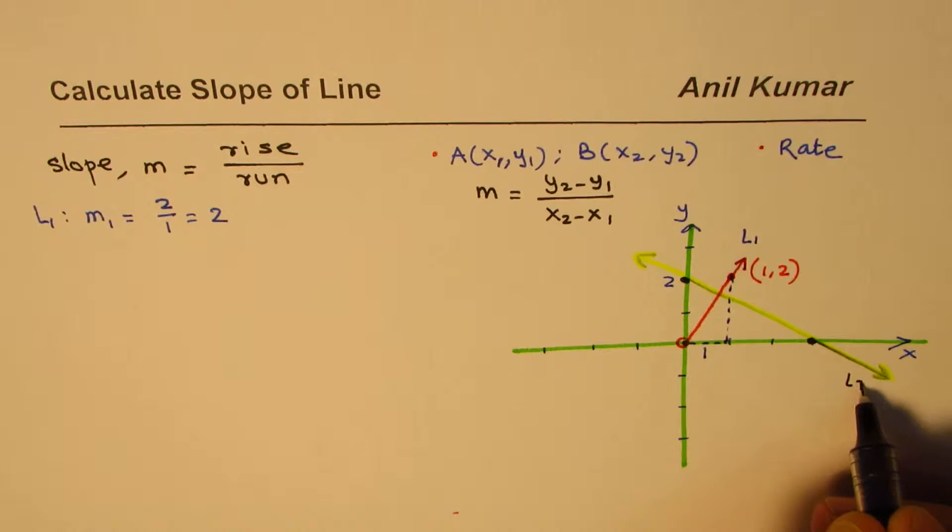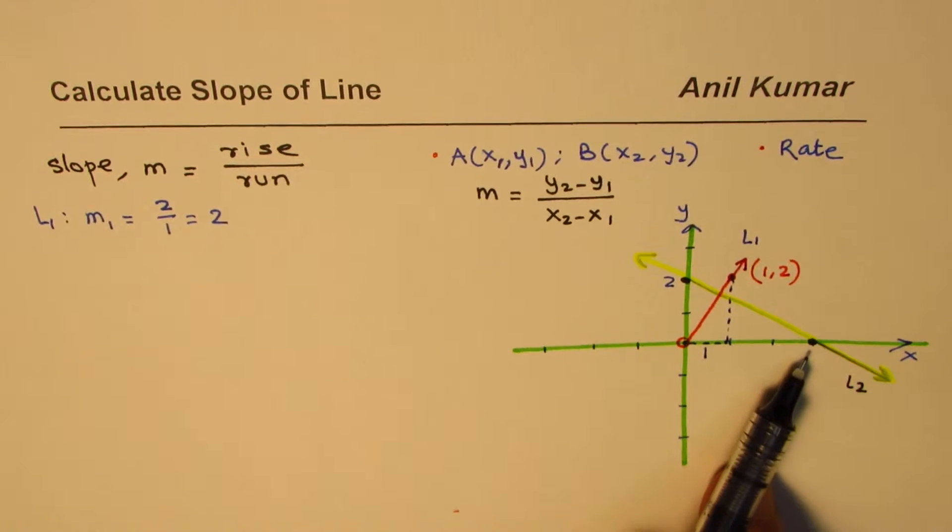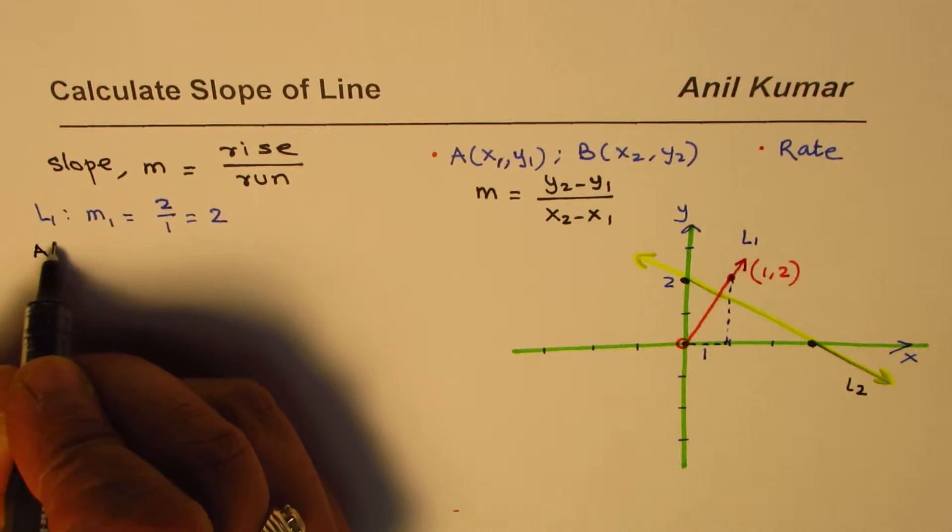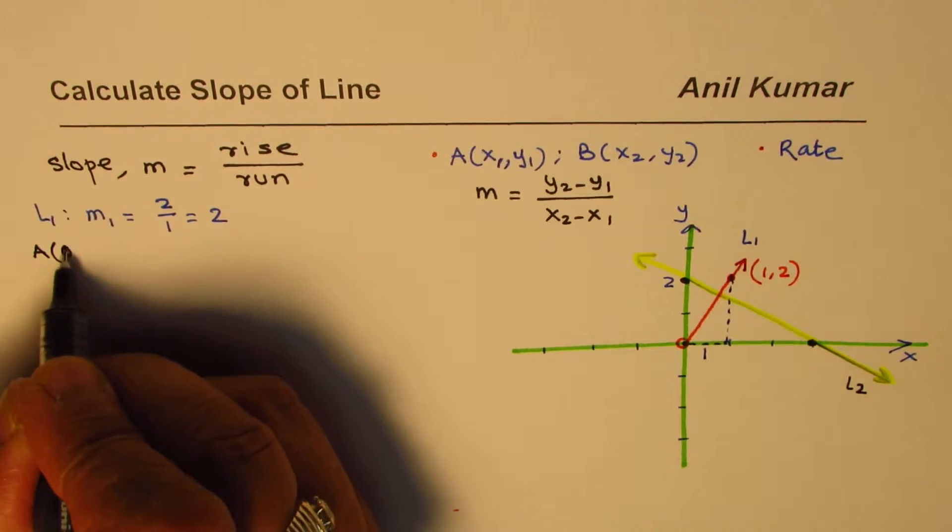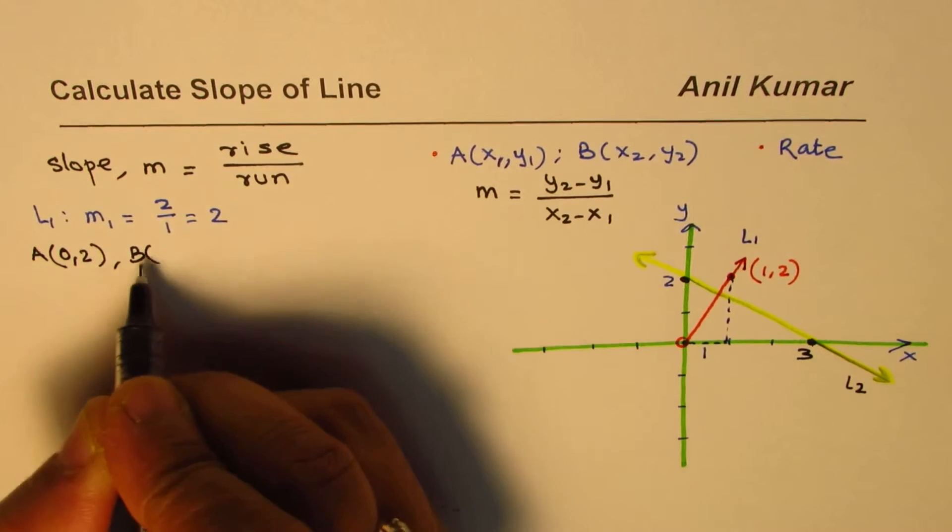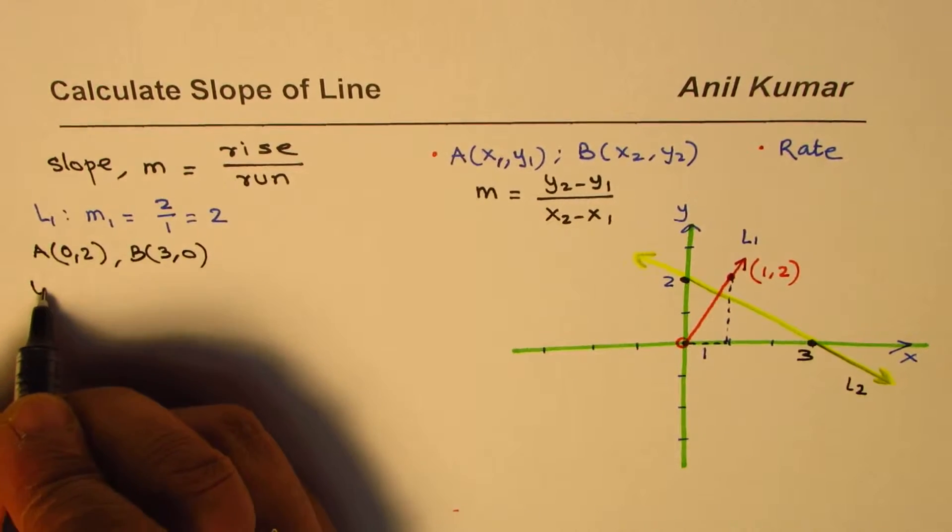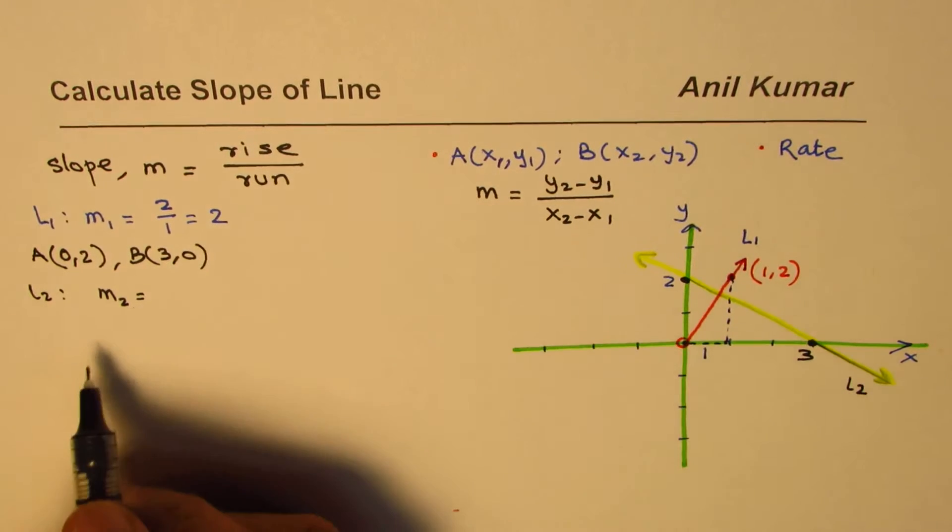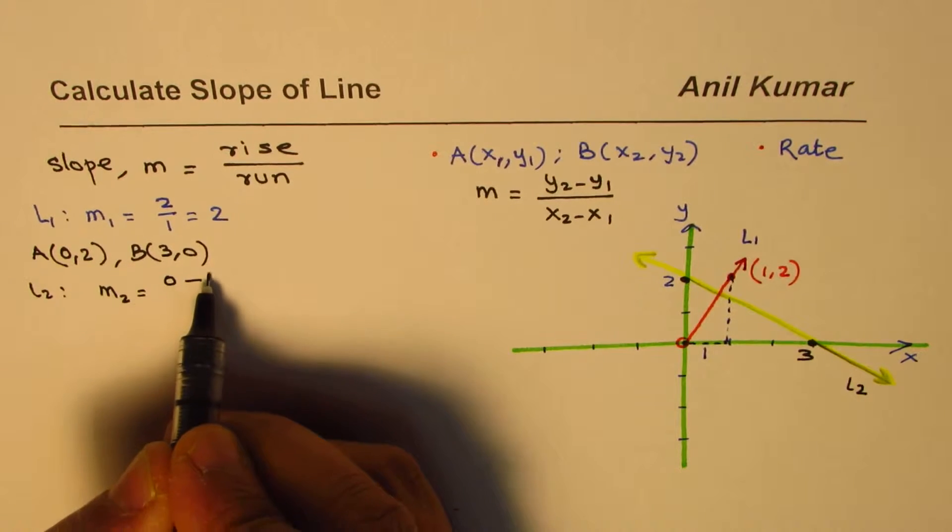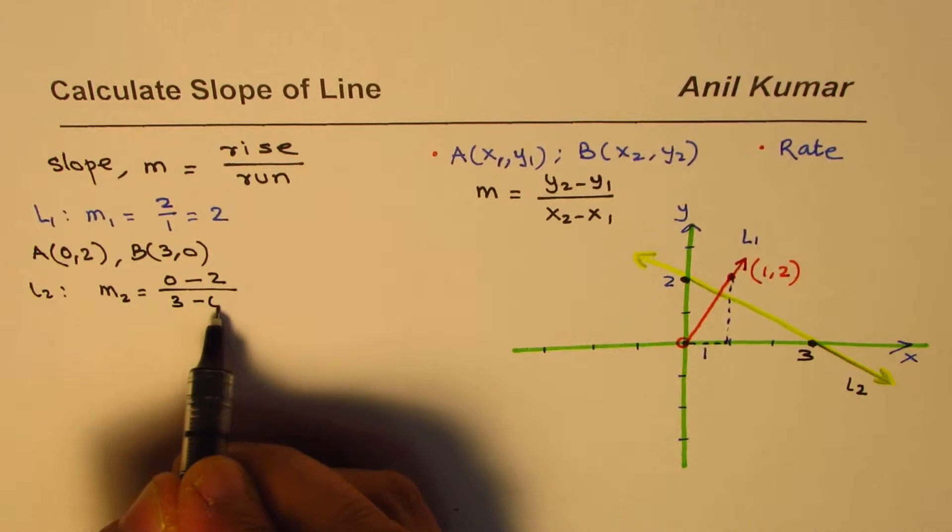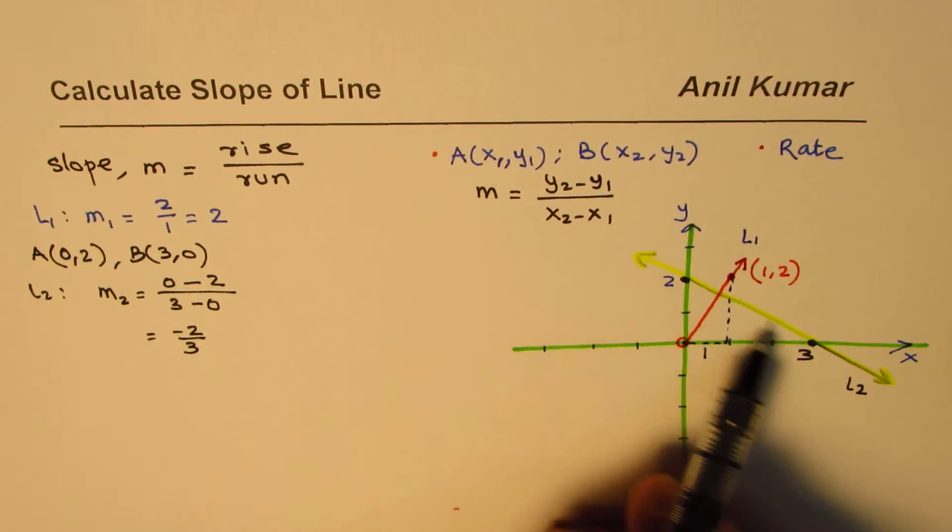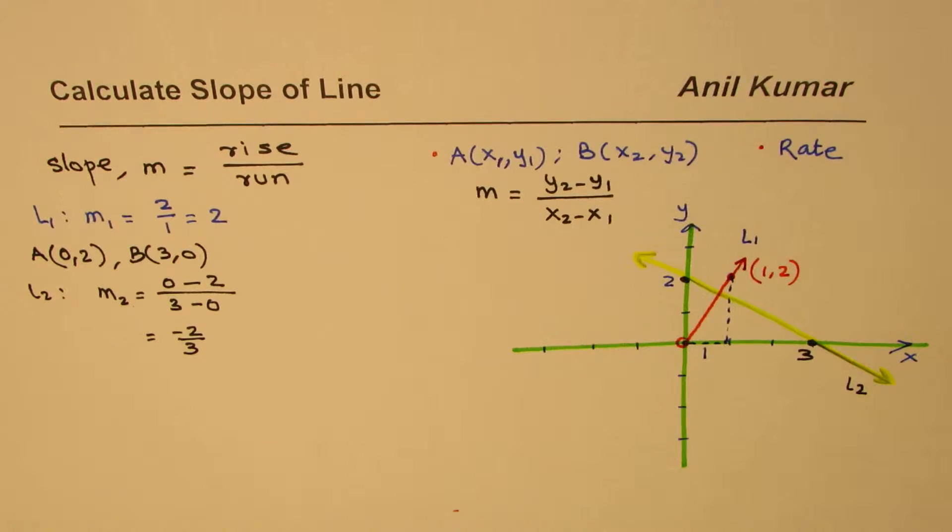Since we are given two points in this case, they happen to be x-intercept and y-intercept. Let's say point A for us is the y-intercept, which is 0, 2, and point B is the x-intercept, which is 3, 0. Then for line 2, slope M2 is y2 minus y1 divided by x2 minus x1. So, 0 minus 2 divided by 3 minus 0. Remember, the order should not be changed. In this condition, we get minus 2 over 3. Now, you can see the line is dropping down. This falling line, negative slope, does reflect the correct answer.